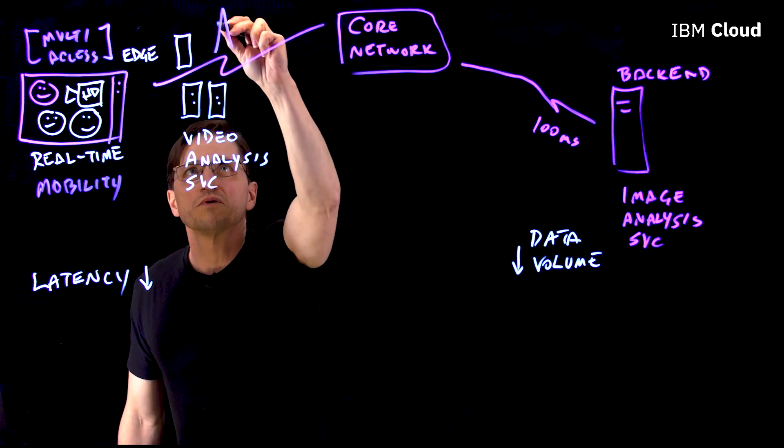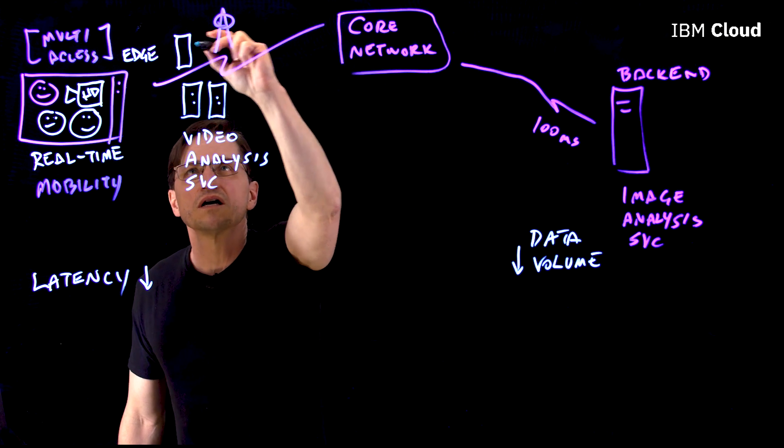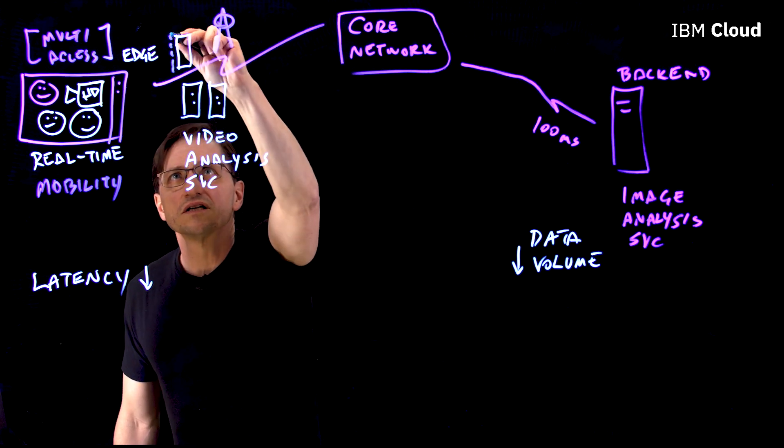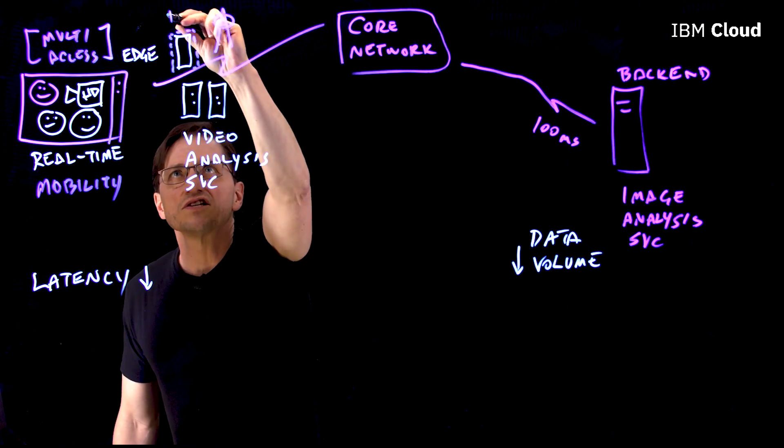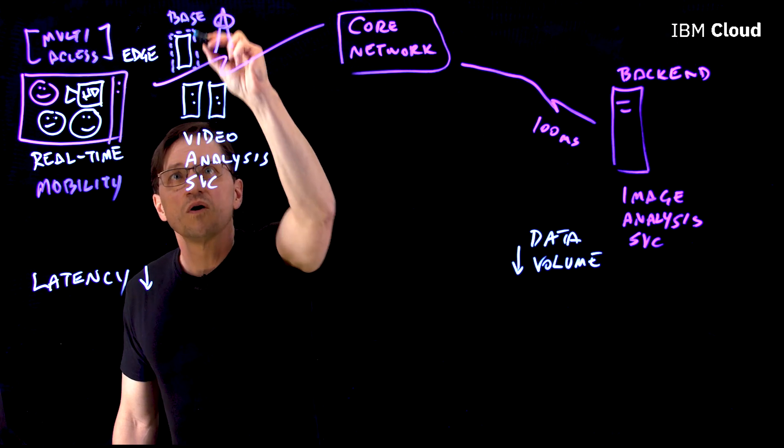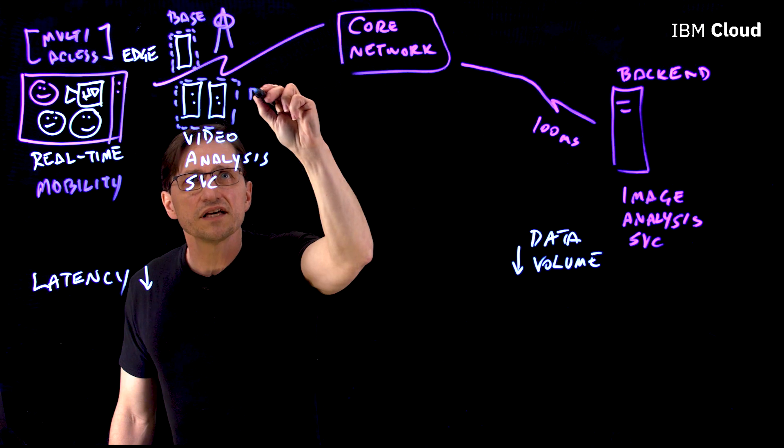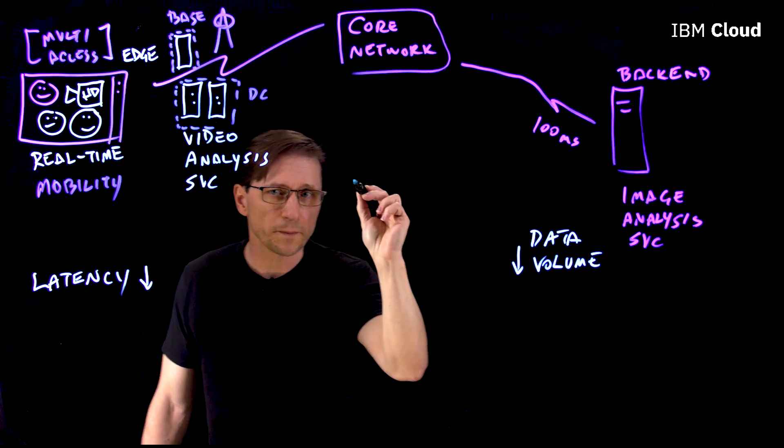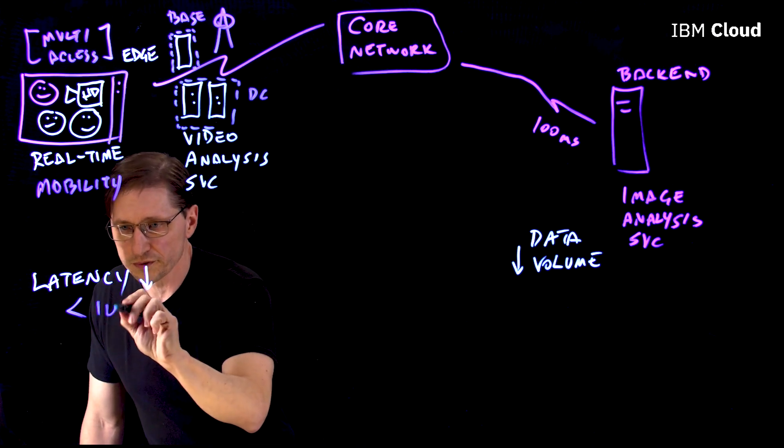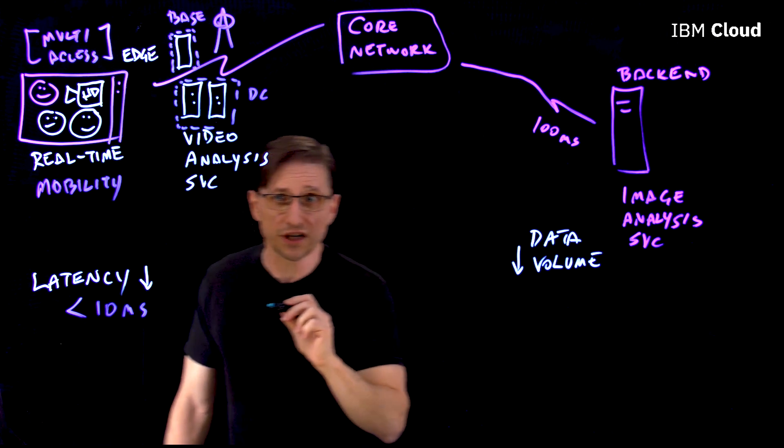So for example, we could have a radio access network and then install it at the base station. Or we could install it at the data center for the network itself. This really drives latency to its absolute minimum, as little as 10 milliseconds.